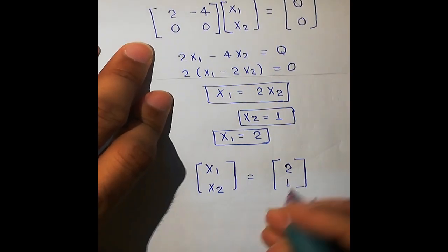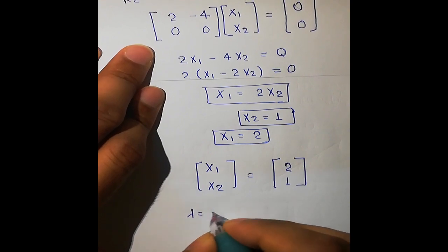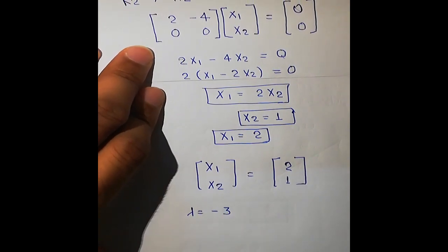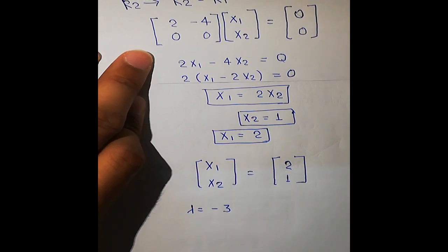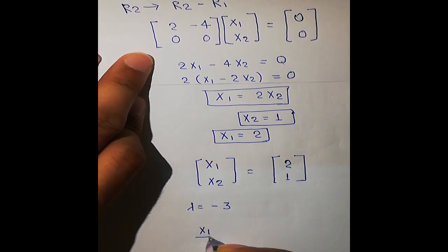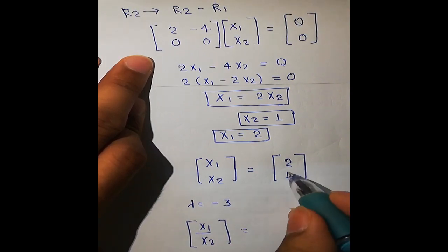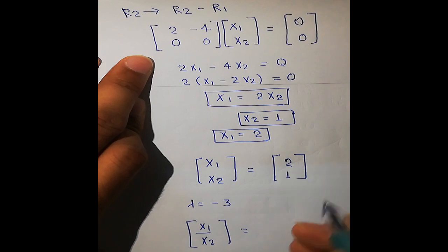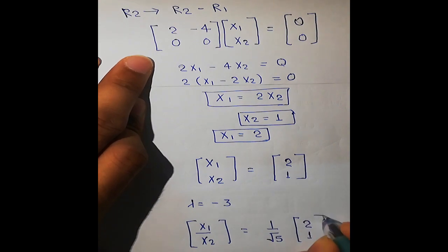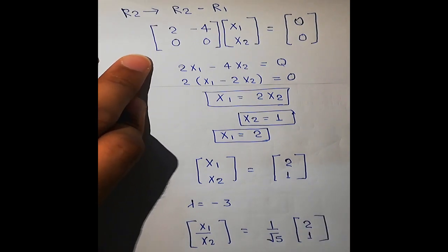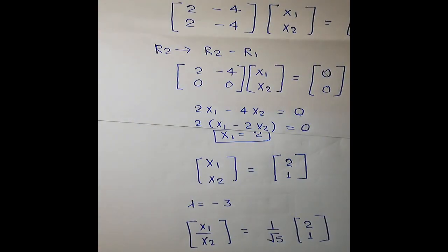Similarly, you can calculate the eigenvector for λ = -3 using the same procedure. To normalize the eigenvector [2, 1], divide by its magnitude √5, giving (1/√5)[2, 1]. In this example we used a 2×2 matrix, but you can apply the same method to a 3×3 matrix.